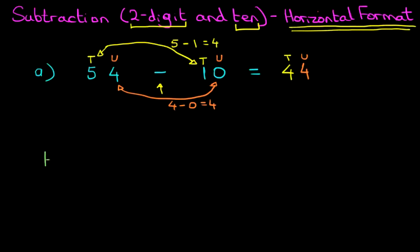Let's have a look at our second example. This time we've got 87 minus 10. Now again, let's label the digits.